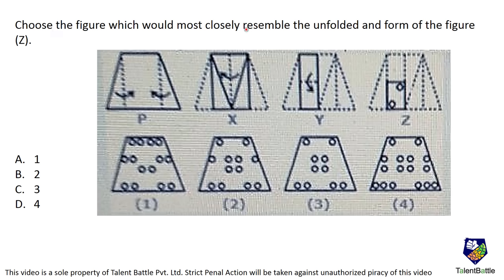Choose the figure which would most closely resemble the unfolded form of figure Z. A normal paper is given - this is the entire paper. It is folded in various stages and after folding, two cuts have been made. On unfolding back to the original, how is it going to look? If you observe carefully there is only one cut shown, because of the fold.